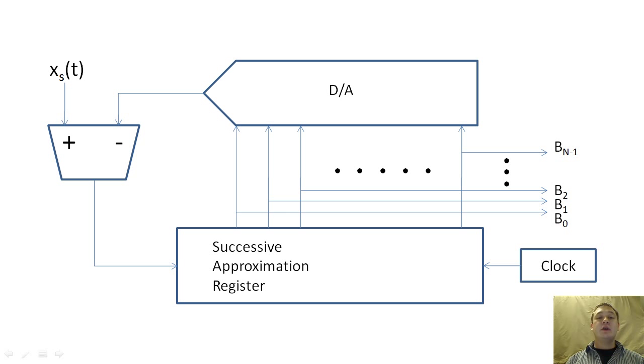We can make two different types of A to D circuits with our comparators. The first circuit quantizes the input iteratively. The circuit uses a comparator, an up-down counter, a D to A converter, and a clock.